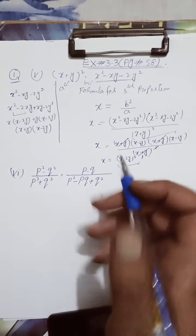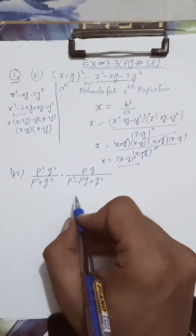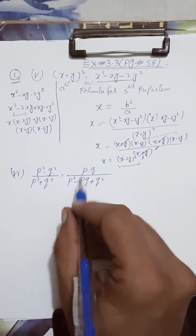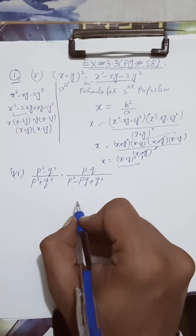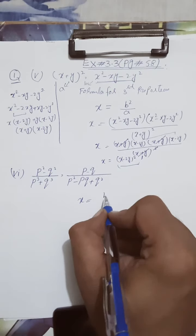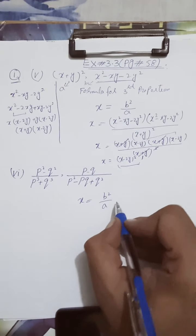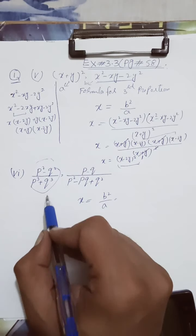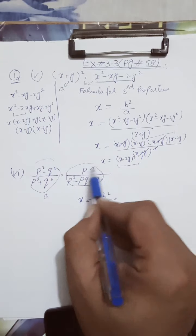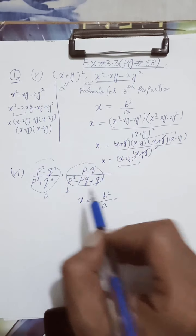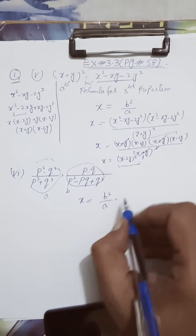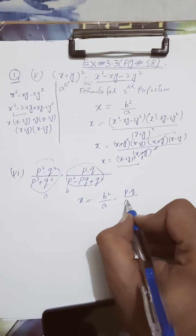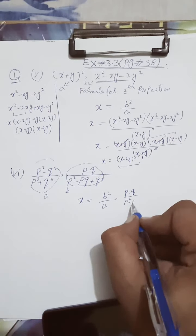Now part number 6. We will find the method using the formula for third proportion: x is equal to b squared over a. The first expression is a and the second expression value will be b. So b squared will be p minus q whole squared, divided by p squared minus pq plus q squared.